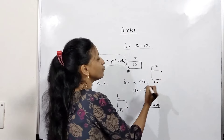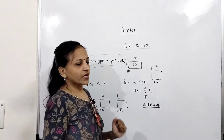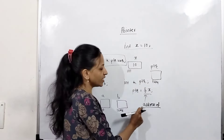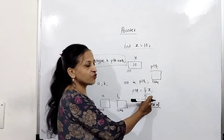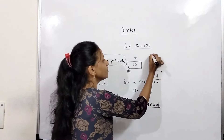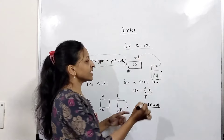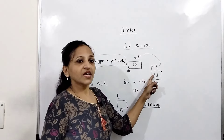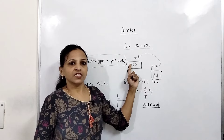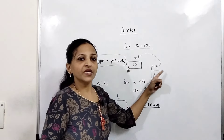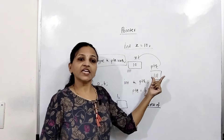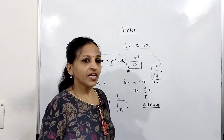With the statement ptr = &x, 1111 is stored in ptr. Indirectly we can say that ptr is now pointing to x. Using ptr, we can fetch the value of x.